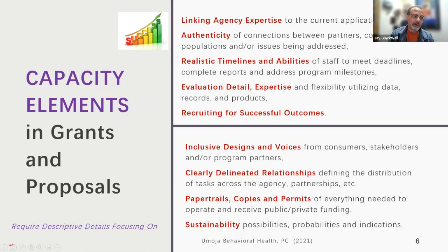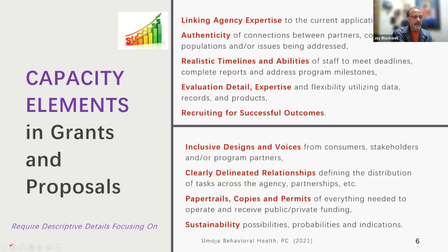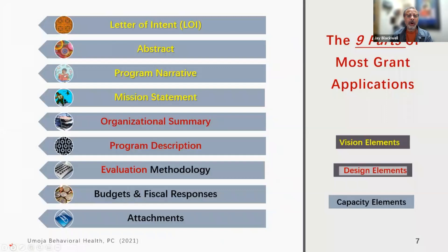Data is important. Also include inclusive designs and voices, relationships, paper trails, copies and permits of everything needed to operate and receive public or private funding — that's part of your capacity. What you see now are the nine parts of most grant applications, broken up into vision elements, design elements, and capacity elements.